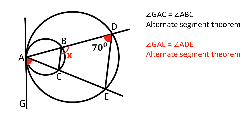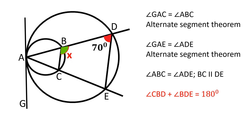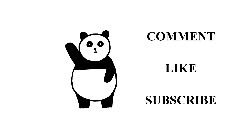Therefore, angles ABC and ADE are congruent, which means BC is parallel to DE. Angles CBD and BDE are supplementary, so angle CBD is equal to 110 degrees.